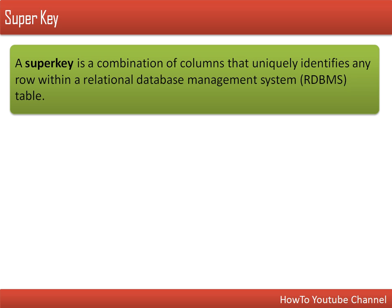Super key is a combination of columns that uniquely identifies a record in a table. When we say uniquely identify, it means a combination of columns which will have a unique value for every record. That is known as super key. For example, if we have a table related to employee, every employee has a unique ID, so that employee ID will be different for every employee. We can say employee ID is a super key.